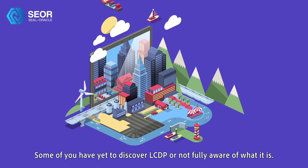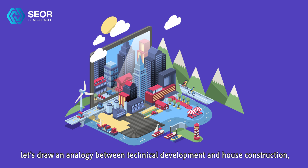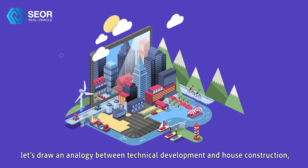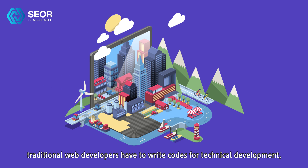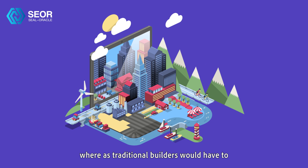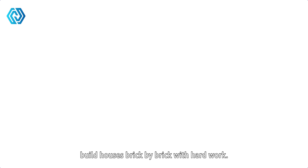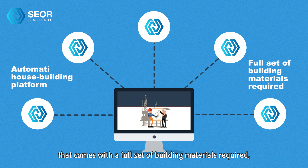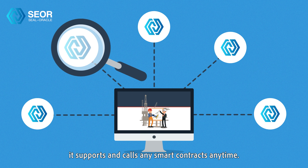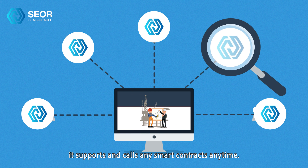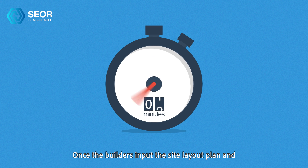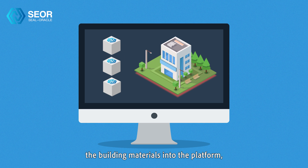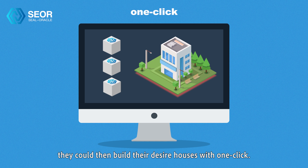Some of you have yet to discover LCDP or are not fully aware of what it is. Here's an example. Let's draw an analogy between technical development and house construction. Traditional web developers have to write code for technical development, whereas traditional builders have to build houses brick by brick. If LCDP is like an automatic house-building platform that comes with a full set of building materials required, it supports and calls any smart contracts anytime. Once the builders input the site layout plan and the building materials into the platform, they can then build their desired houses with one click.